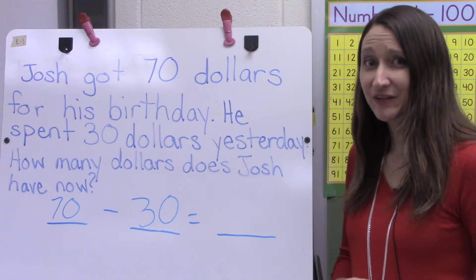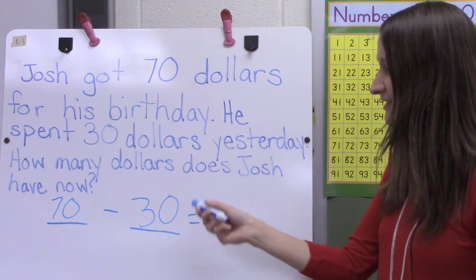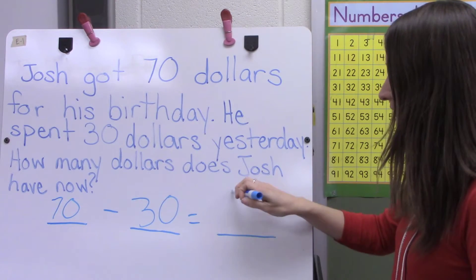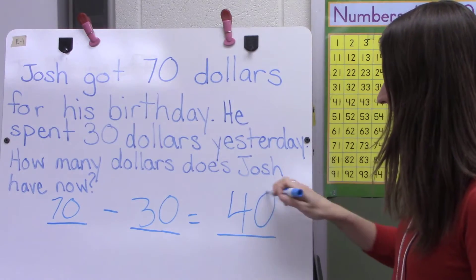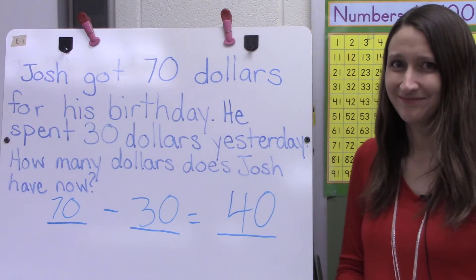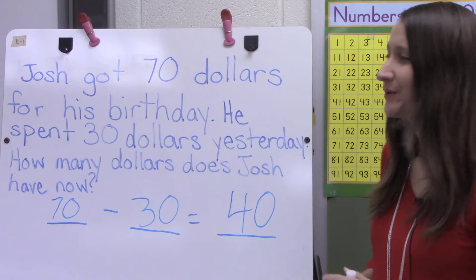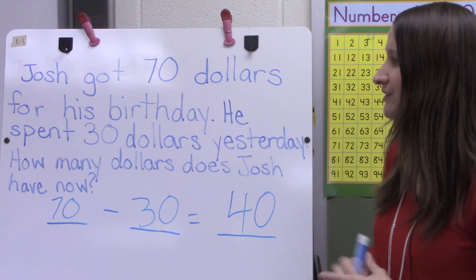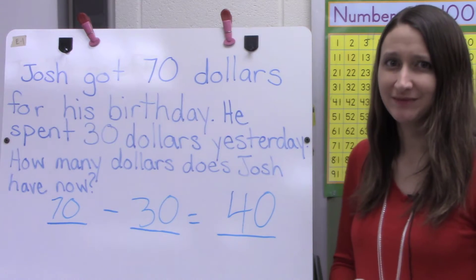Now I can finish my equation. 70 minus 30 equals 40. I now know that Josh has $40 left from his birthday.